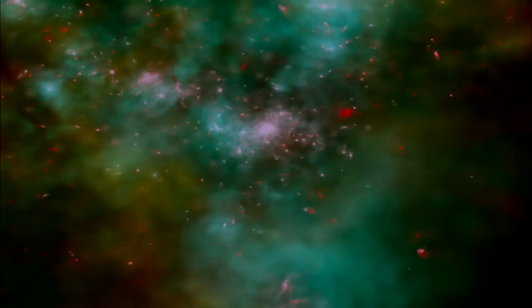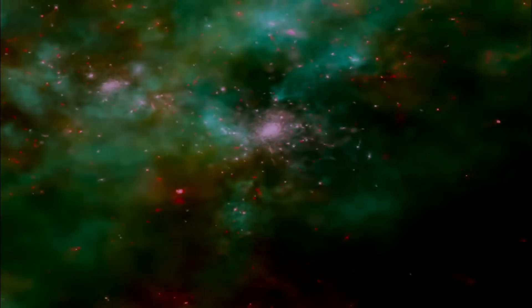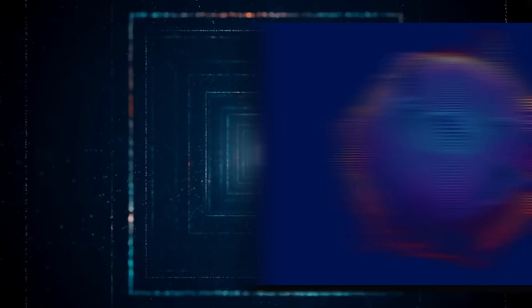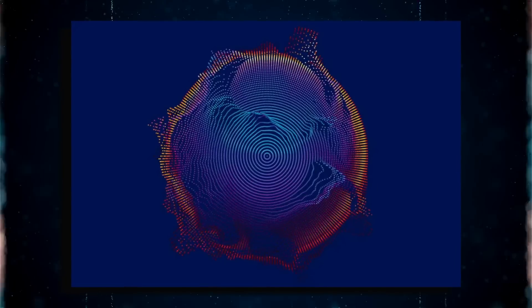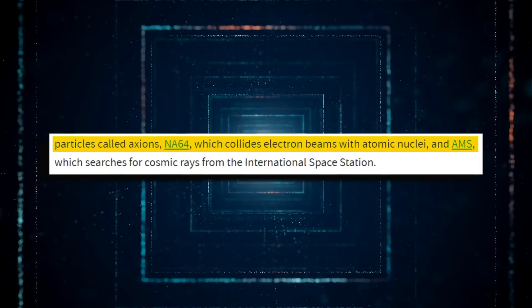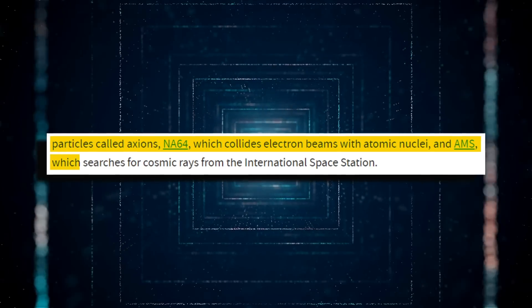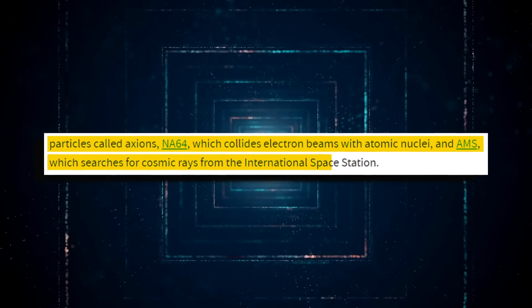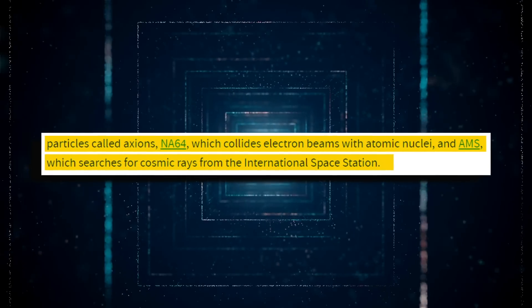CERN, on the other hand, is also home to a number of non-LHC dark matter experiments, including CAST, which searches for hypothetical particles known as axions, NA64, which collides electron beams with atomic nuclei, and AMS, which searches for cosmic rays from the International Space Station.